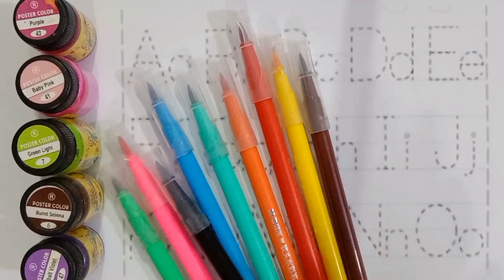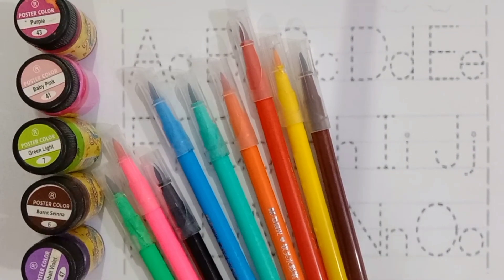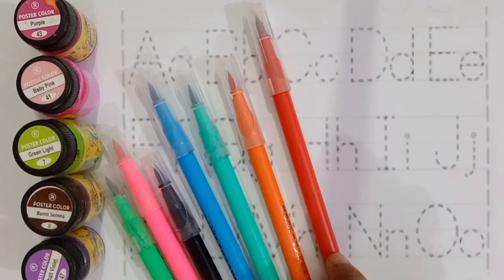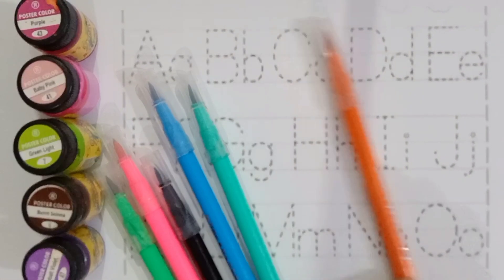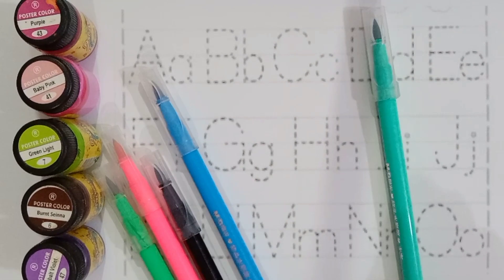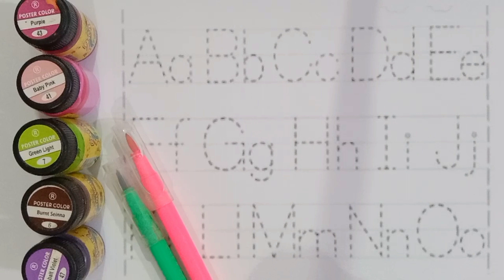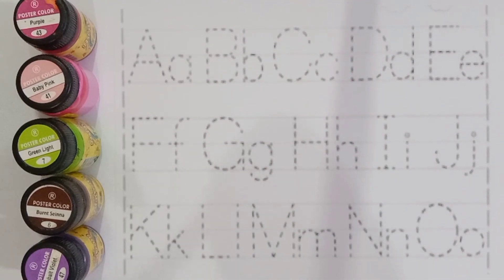Hello kids, how are you? Read with me, colors names: brown color, yellow color, red color, orange color, light green color, sky blue color, black color, pink color, green color.